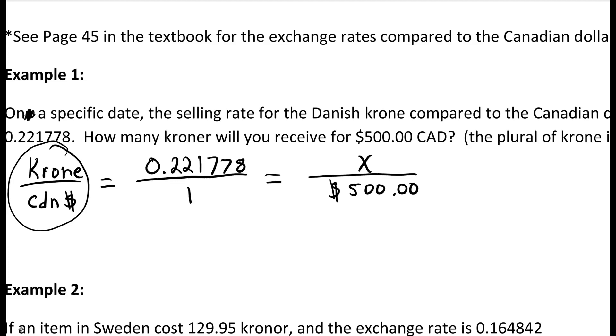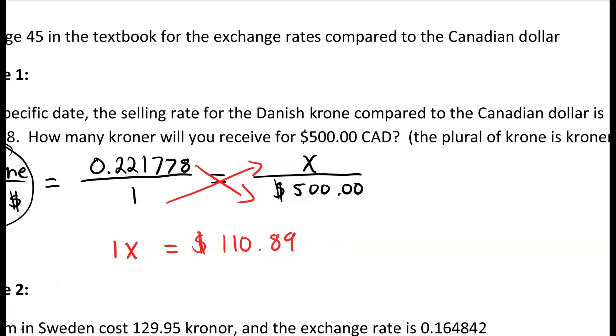First thing we need to do is set up our cross multiplication, and that means we're going to get 1x equals 500 multiplied by 0.221778, which will give us $110.89. Remember when you're dealing with dollar amounts you're going to two decimal places.